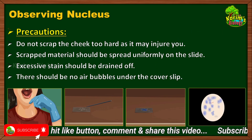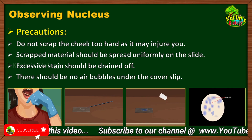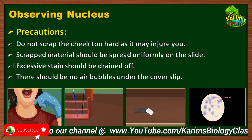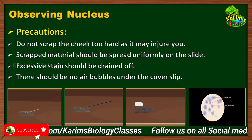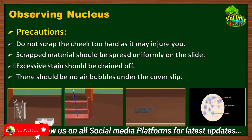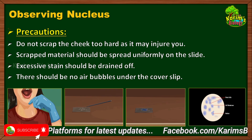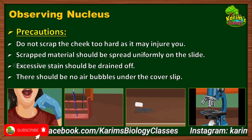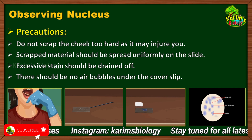The fourth precaution is that there should be no air bubbles under the cover slip. When placing the cover slip, if air bubbles are present, they may appear as cells under the microscope, making it hard to differentiate air bubbles from actual cells. So while placing the cover slip, make sure no air bubbles are formed.